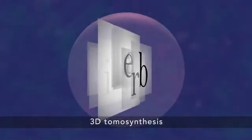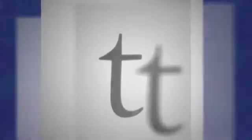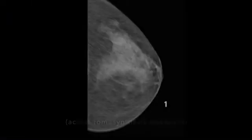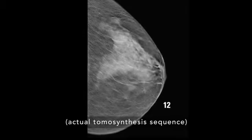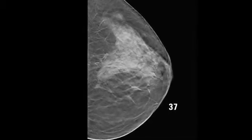3D tomosynthesis is different because it shows your tissue in very thin layers, almost like turning pages in a book. That makes it easier for doctors to see if there's anything to be concerned about. There's less chance for a cancer to hide behind overlapping tissue.